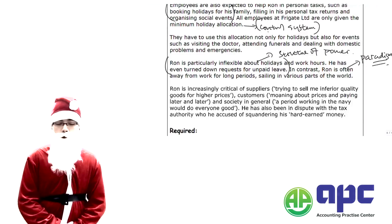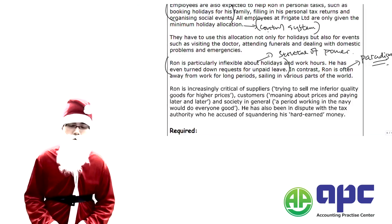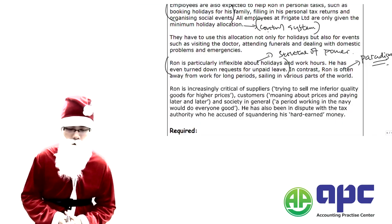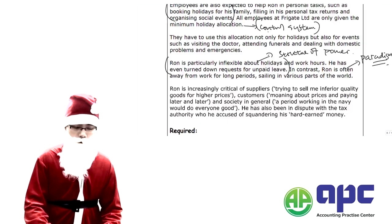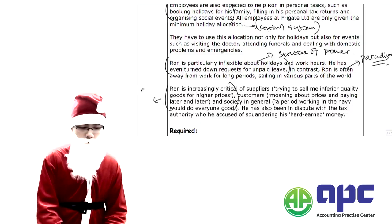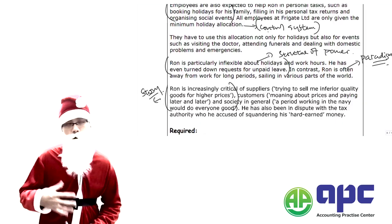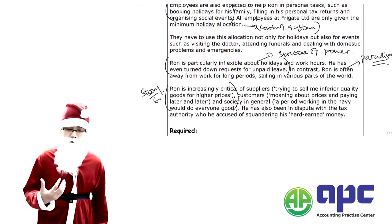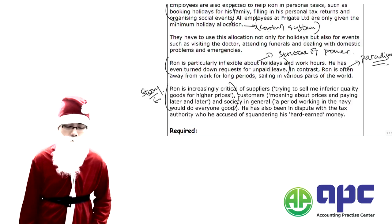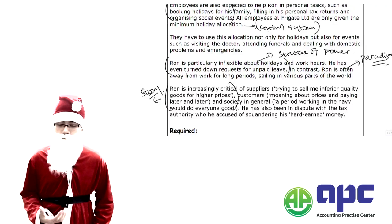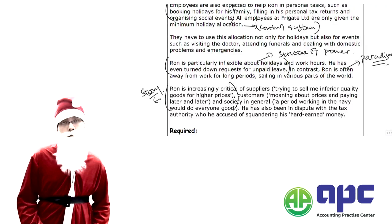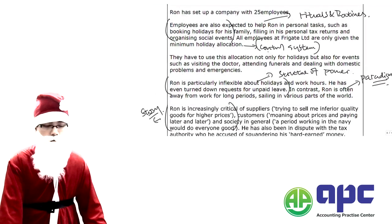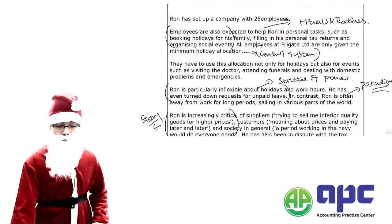Ron is increasingly critical of suppliers trying to sell low-quality goods at high prices, customers paying late, and says society is quite lazy. This would be the Story conveyed to employees — that everybody is not doing a good job. He has also been in dispute with the tax authority, whom he accuses of squandering his hard-earned money. These are the stories told by Ron to employees within the organisation.